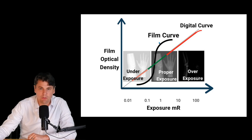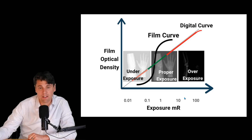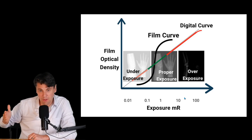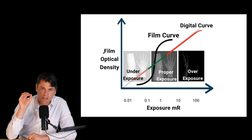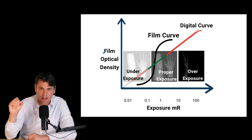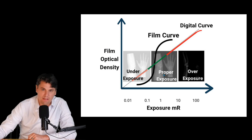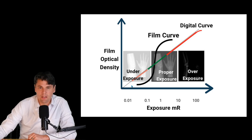If you look at a curve like this, what we have plotted is the exposure — how much x-rays are actually getting to the image receptor — plotted against the film's optical density, which is the way that we characterize basically the brightness or darkness of the film.